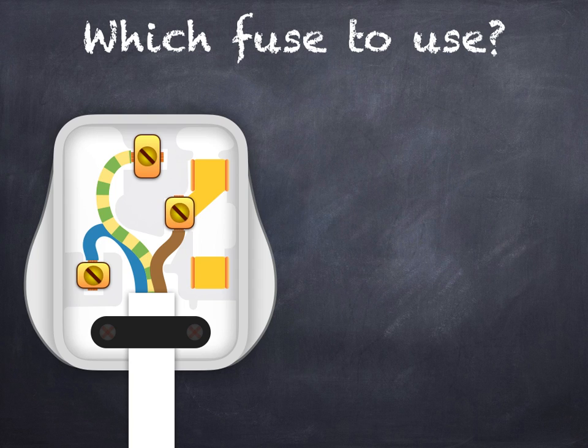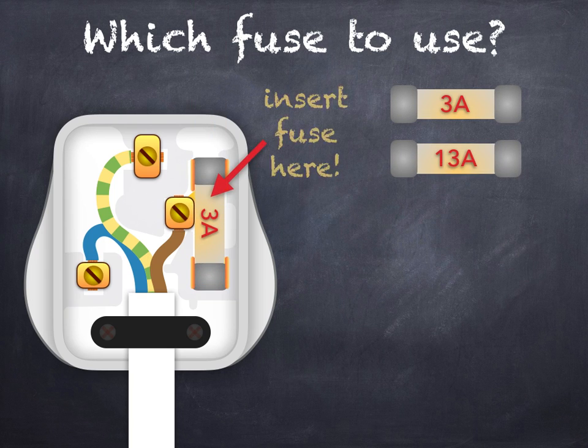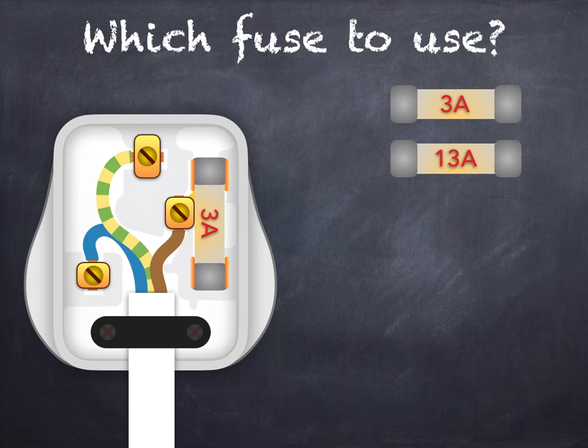The most common fuses used with electrical devices are the 3 amp and the 13 amp. The fuse is placed here in an electrical plug between the live terminal and the live pin. It's designed to protect the flex by breaking if the current increases above the fuse's current rating, which in this case is 3 amps.